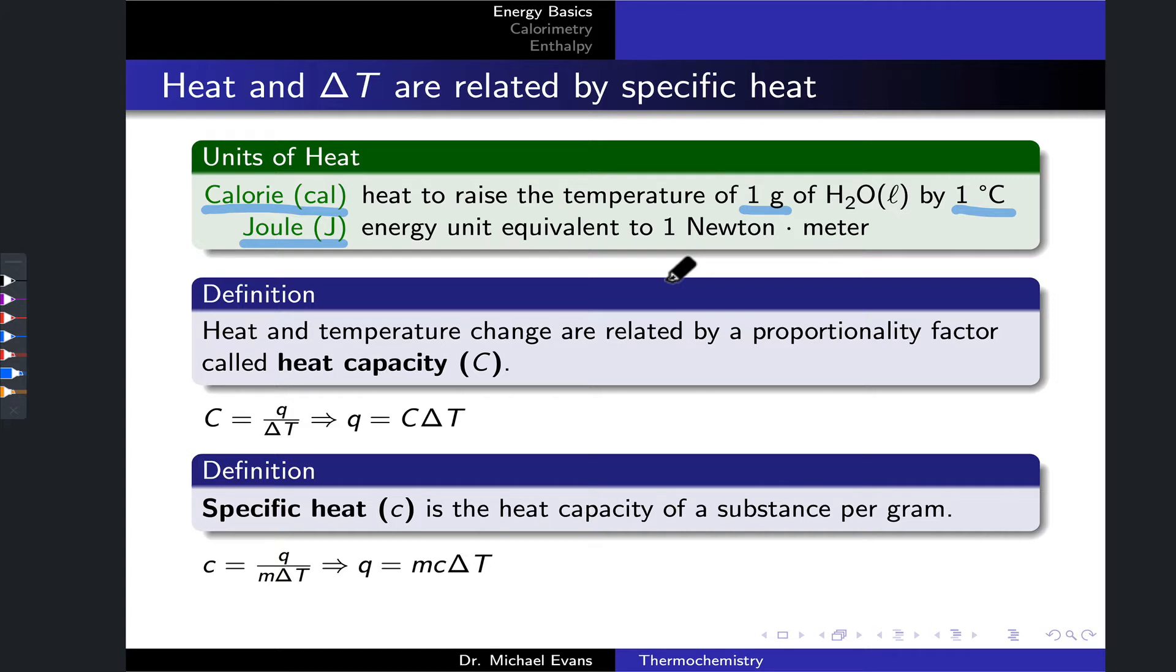Now, let's get back to this difference between heat and temperature. We've seen they're not the same conceptually, but they are related in quantitative terms. We can relate them in quantitative terms by defining a constant that we call the heat capacity, and that's abbreviated with the capital letter C.